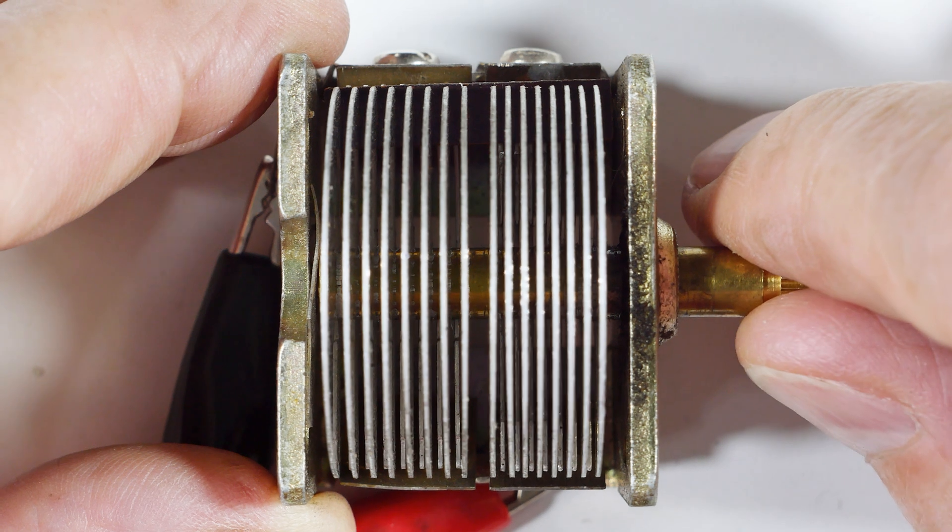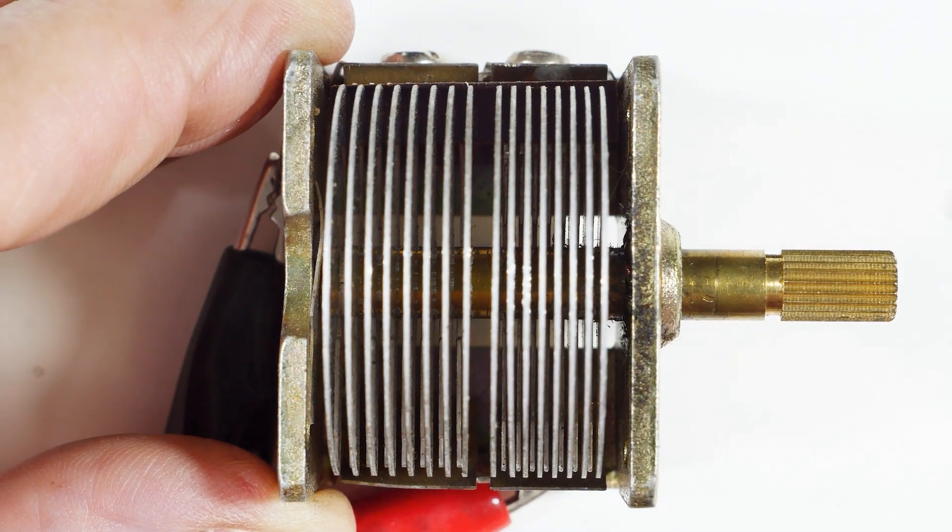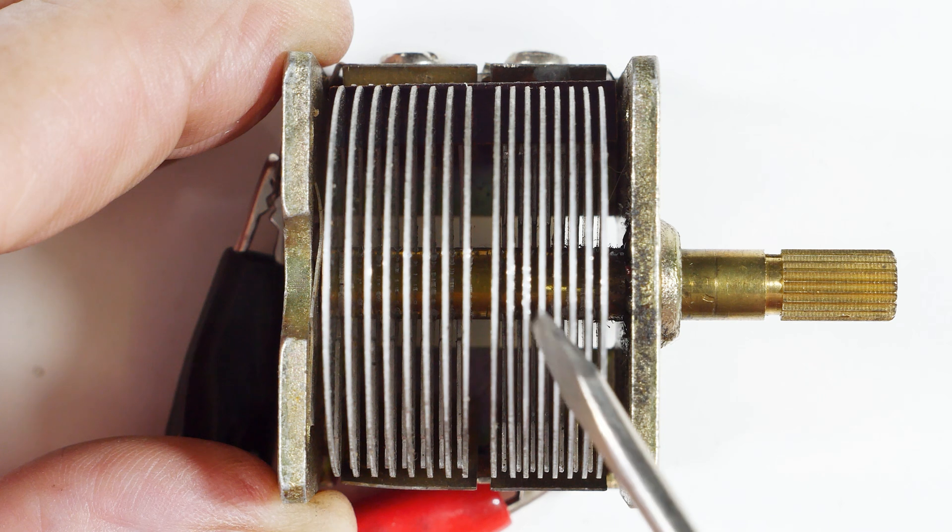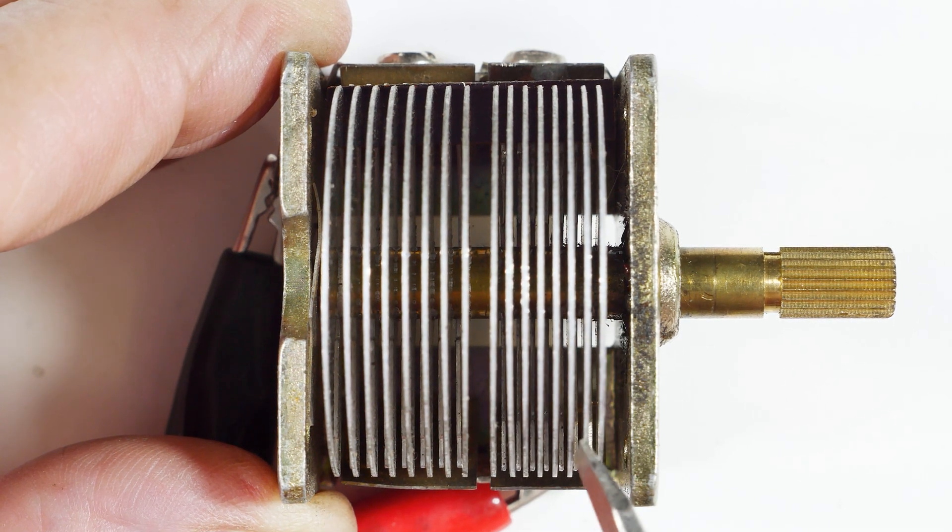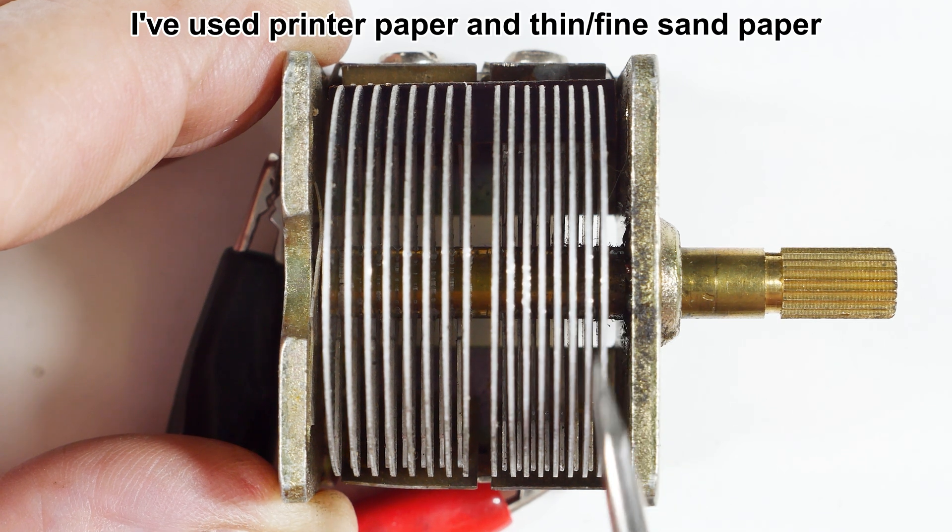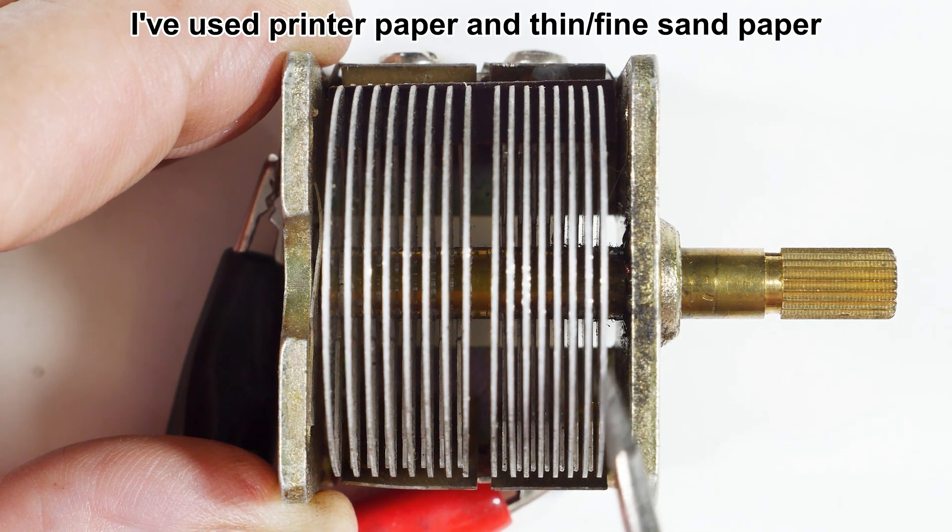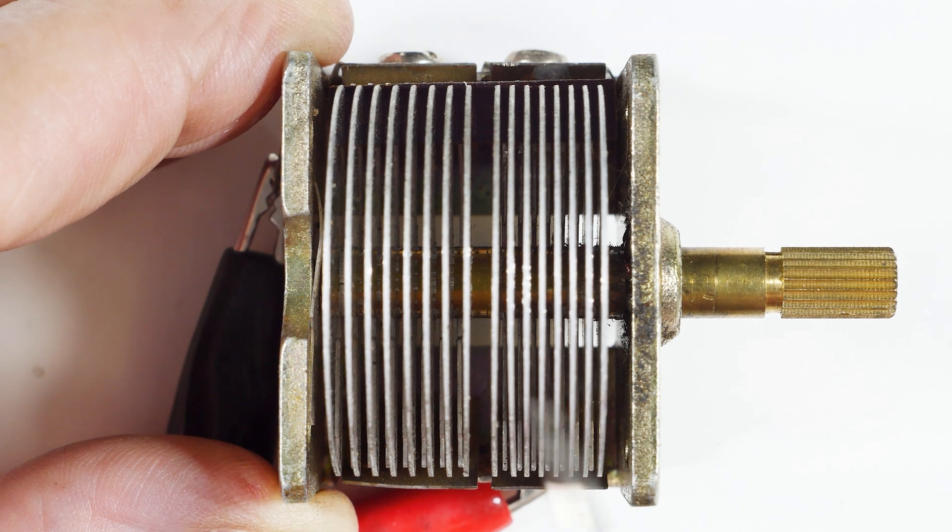A couple different things can happen. You can have mechanical damage—if there's just dirt between the plates, or I've had one that had a little bit of corrosion, and you can slip something in there and remove the corrosion without damaging the plates or bending the plates, that's okay.